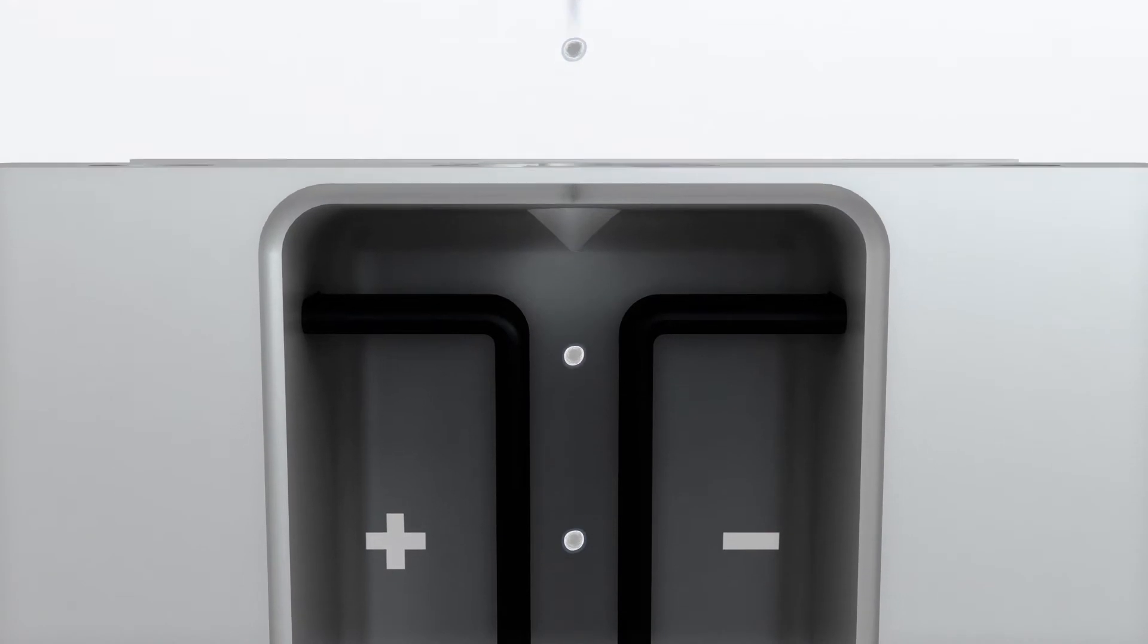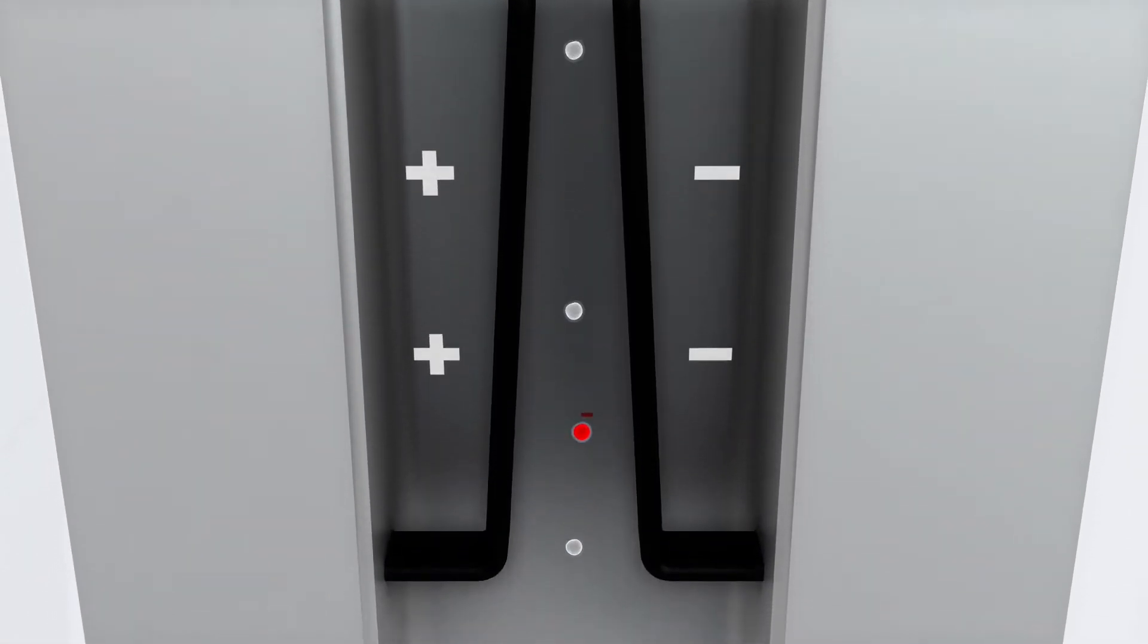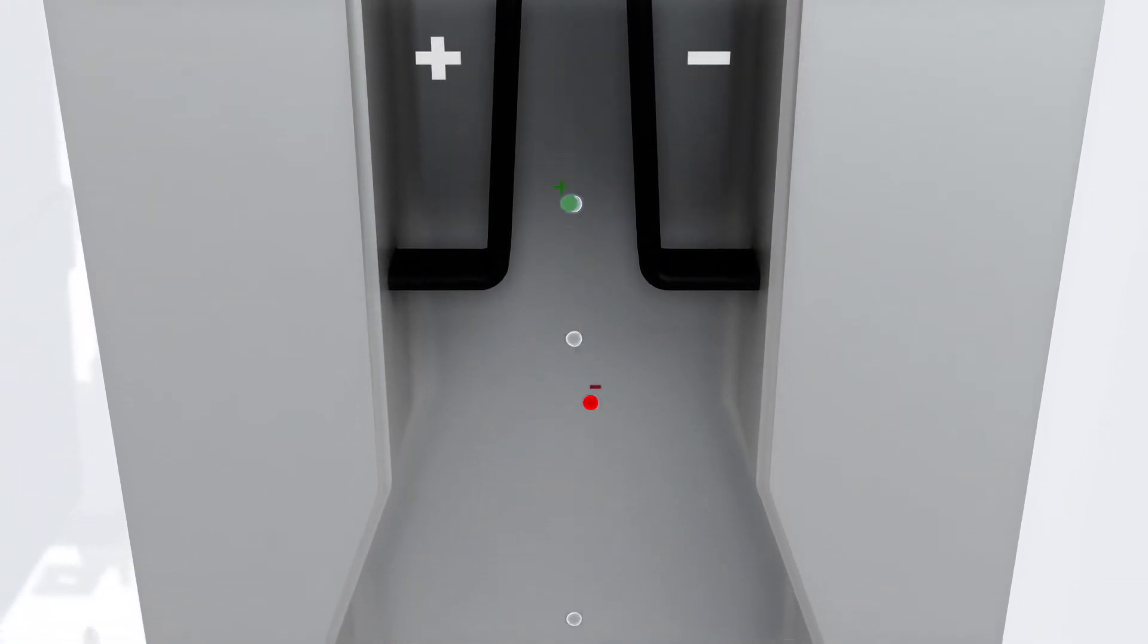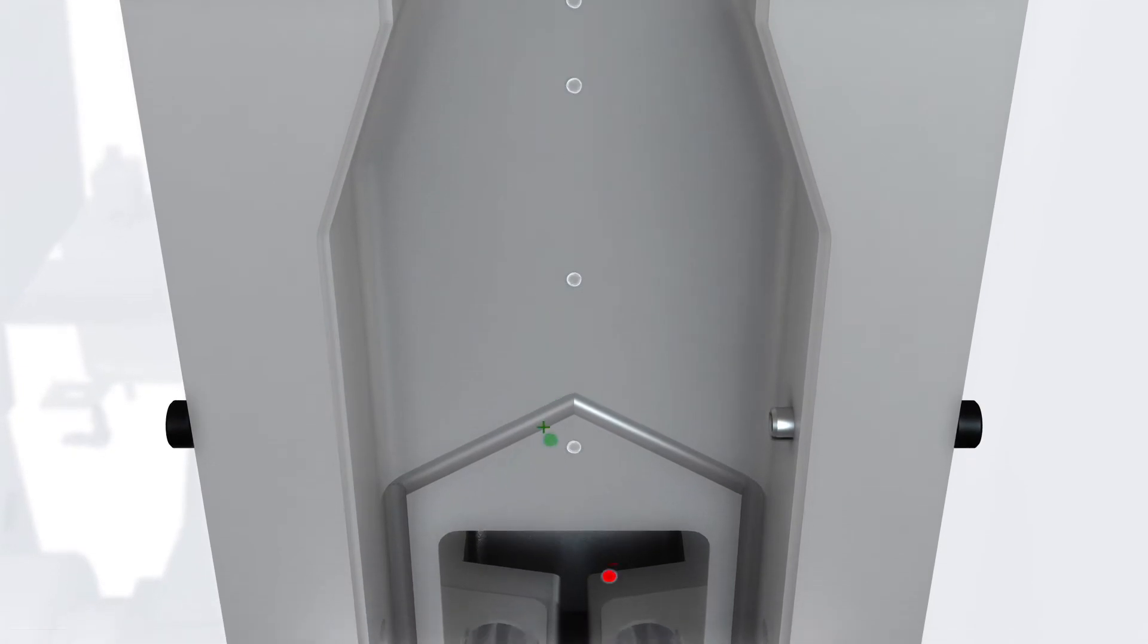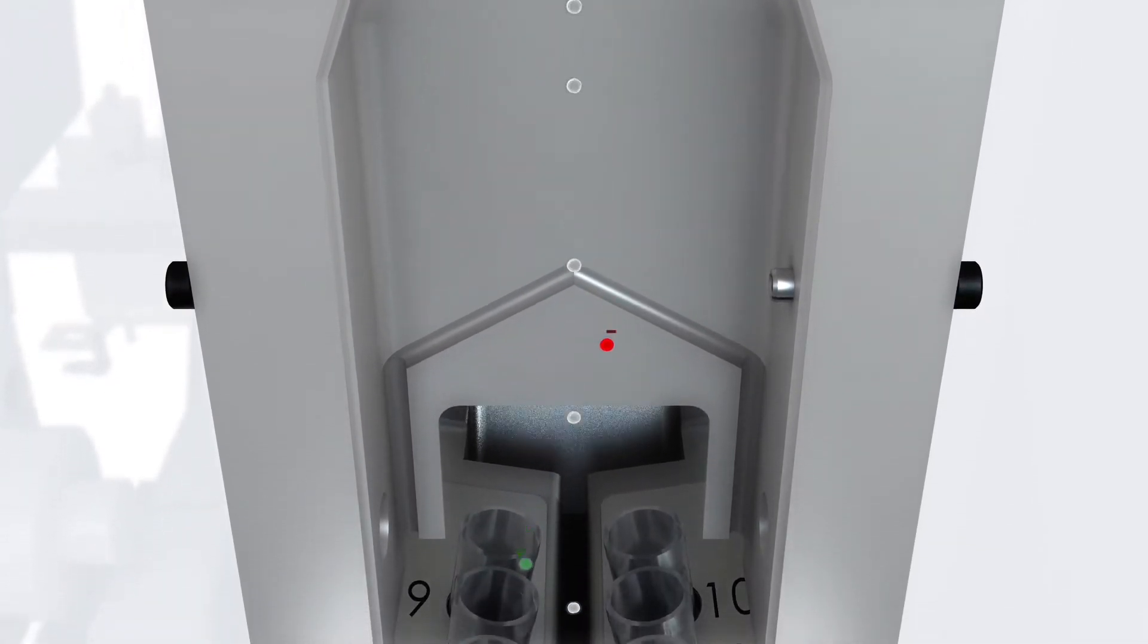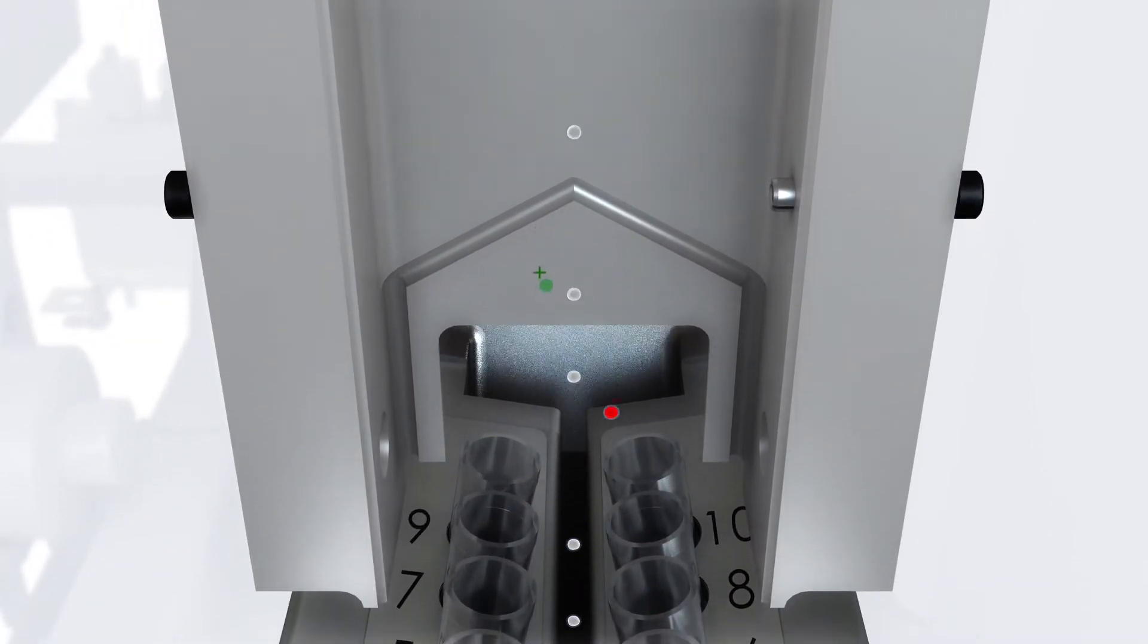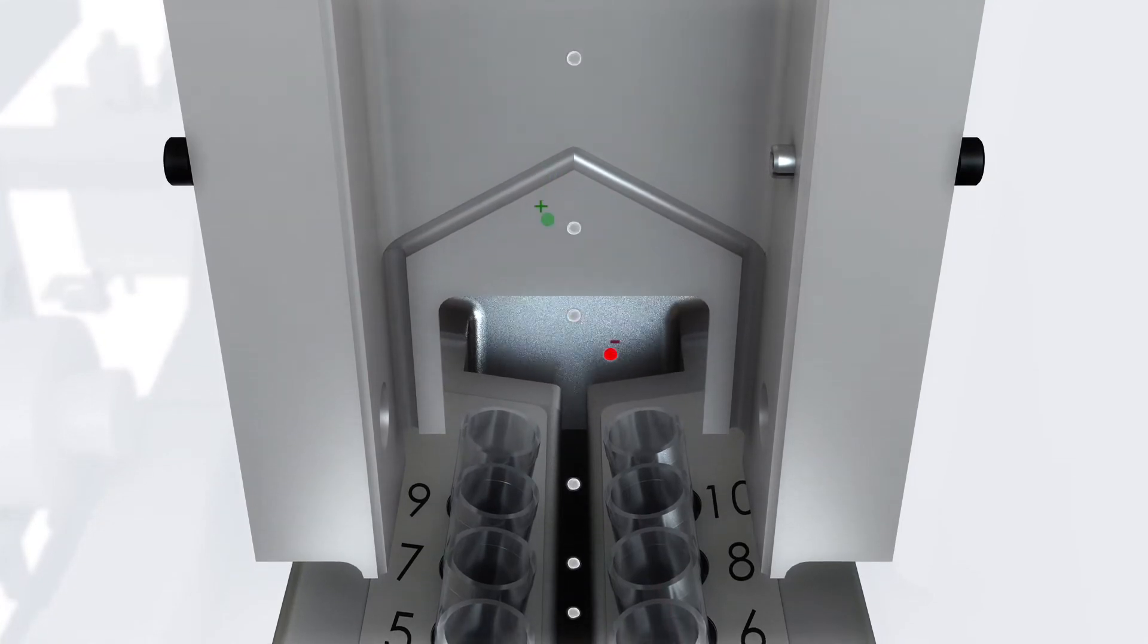During sorting, cells can die from shear forces due to rapid pressure changes in the fluid stream. Fluctuating stream dynamics also negatively impact sample purity. The S3E's jet-in-air system maintains a constant stream velocity to deliver samples with greater than 99% purity.